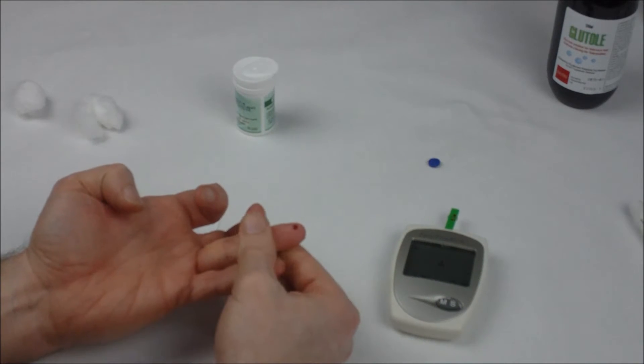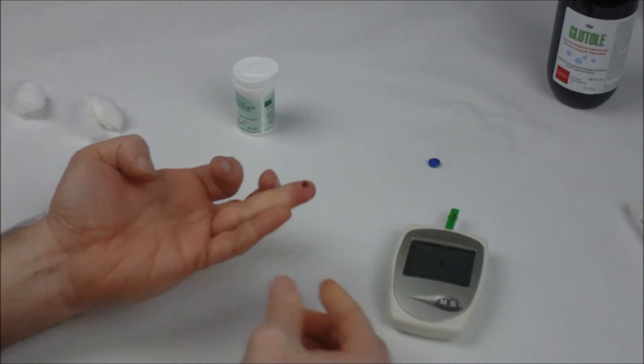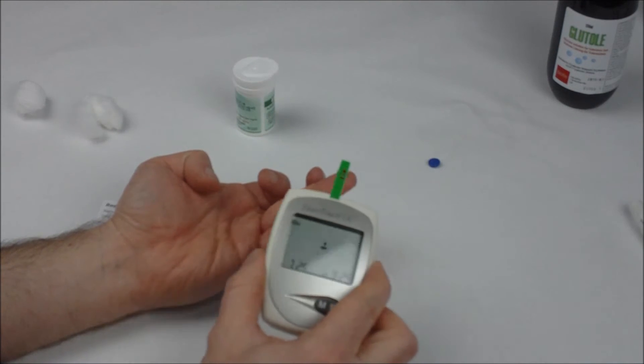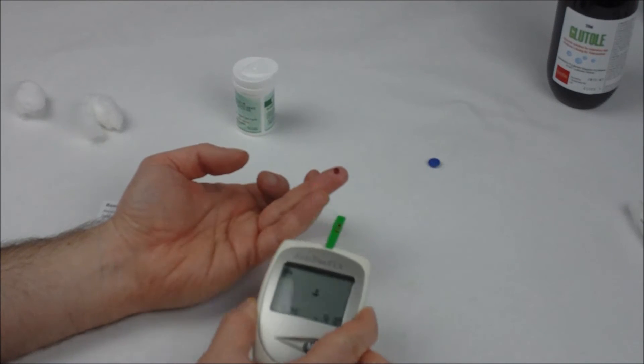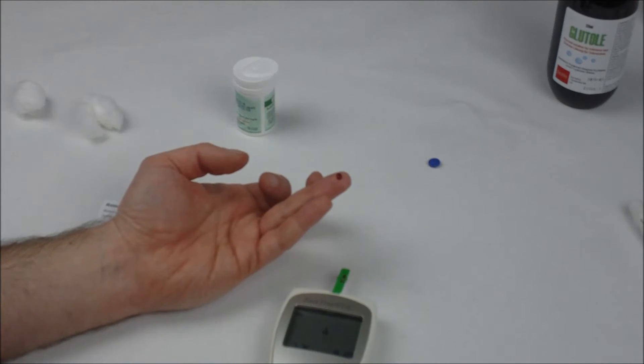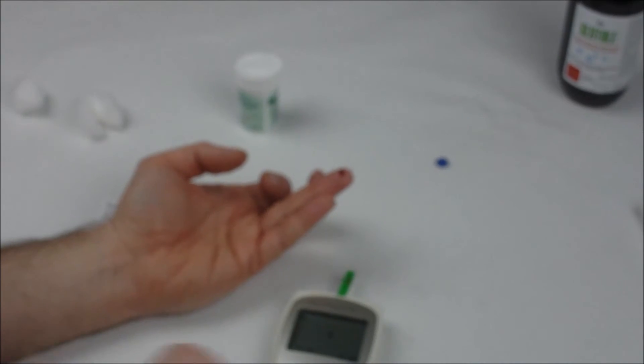Again don't squeeze your finger too much. Once you've got a good sized blood drop. Remember the glucose test strip. We're going to apply this on the right hand side. So let me show you up close.